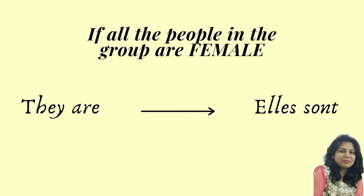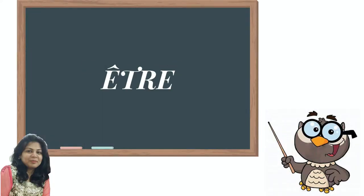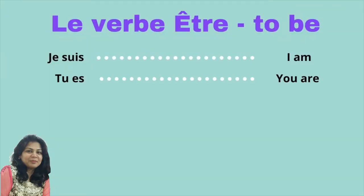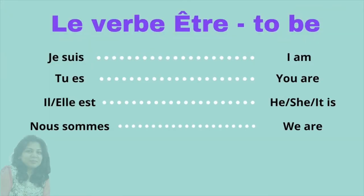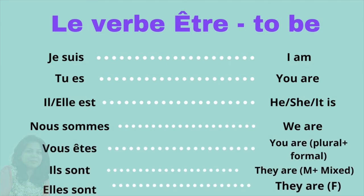So this was the verb and I hope you have understood the use of this verb, how do we use it, and you have also understood the conjugation of this verb. This is called conjugation of the verb.